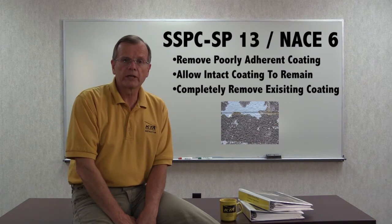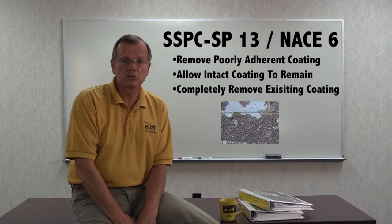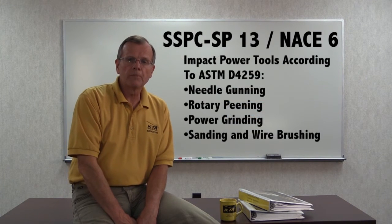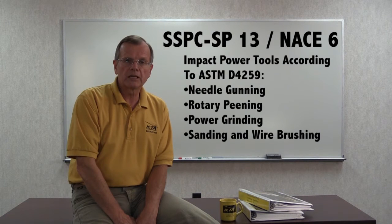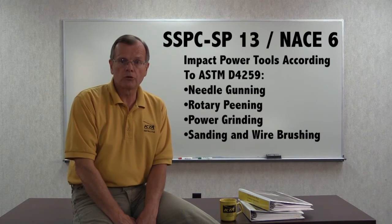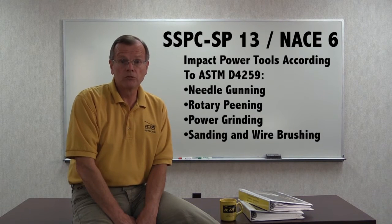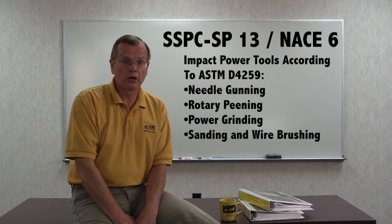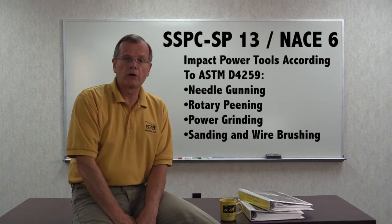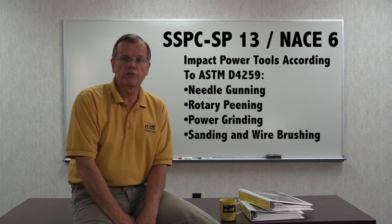These methods remove poorly adherent coating, allowing intact coating to remain, or completely remove the existing coating given adequate pressures and dwell times. Impact power tools, according to ASTM D4259, include needle gunning and rotary peening, which remove the coating but may fracture and remove the concrete at the same time. The standard also addresses power grinding, sanding, and wire brushing according to ASTM D4259.